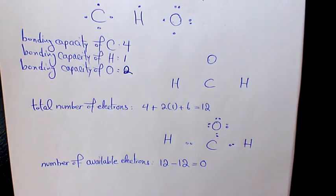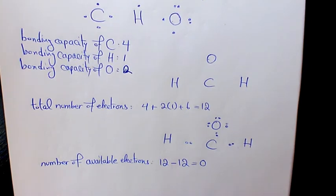Now we need to see if every element, like C and O, follow octet rule. For carbon, we have 2, 4, 6. So it doesn't follow octet rule right now. And oxygen, 2, 4, 6, 8. So we are okay with the oxygen.